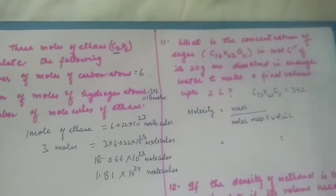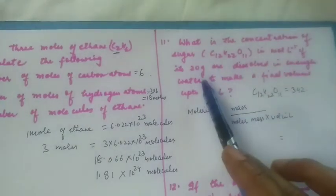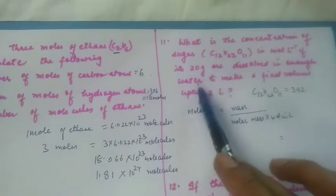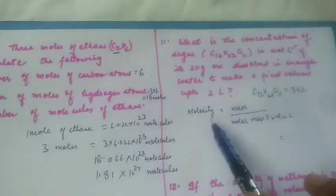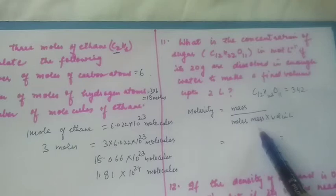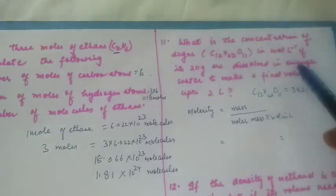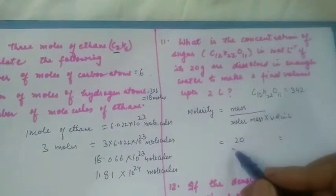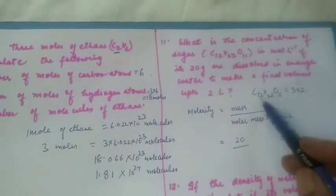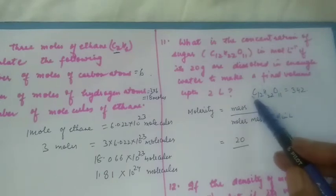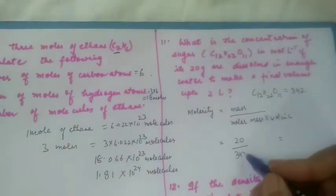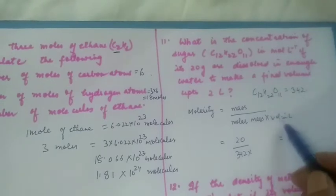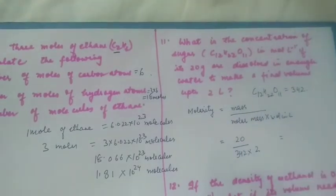Next: what is the concentration of sugar in moles per liter if 20 grams are dissolved in enough water to make a final volume of two liters? Molarity formula is mass divided by molar mass, divided by volume in liters. Molar mass of sugar (C₁₂H₂₂O₁₁) is 12×12 + 22×1 + 11×16 = 342. So molarity = 20 ÷ 342 ÷ 2 = 0.029 moles per liter.